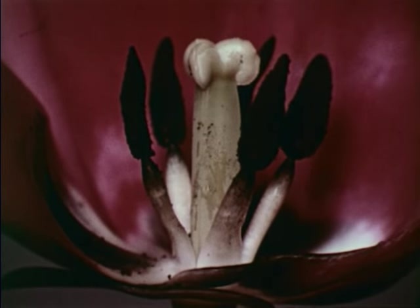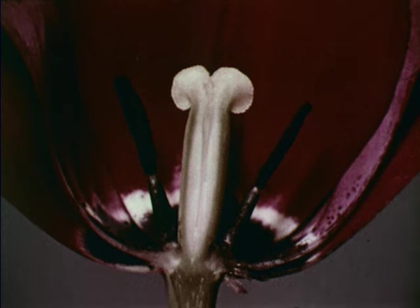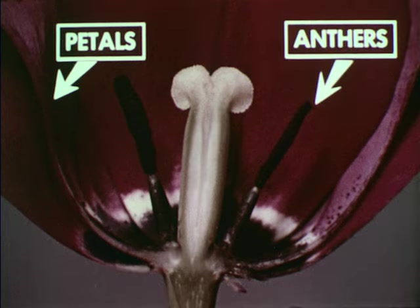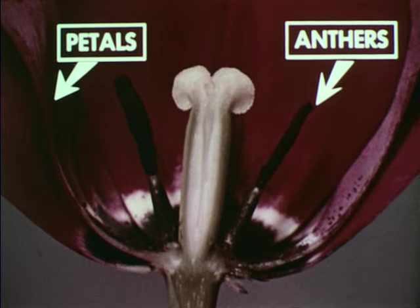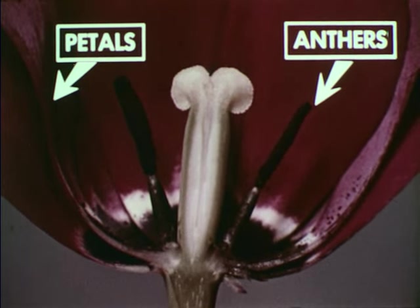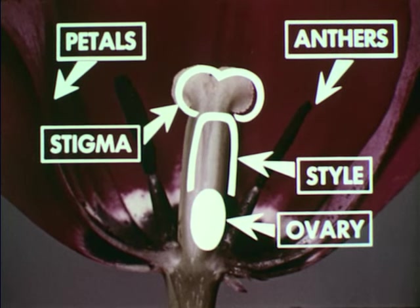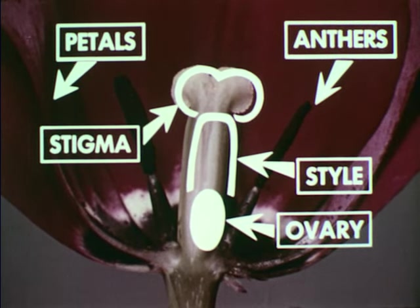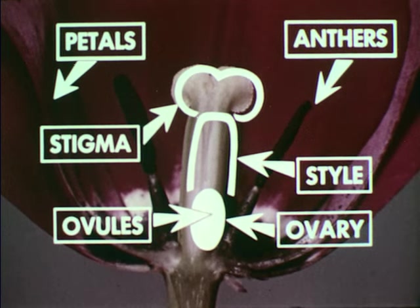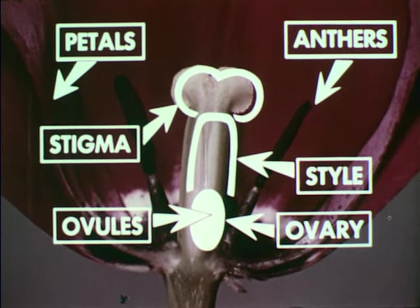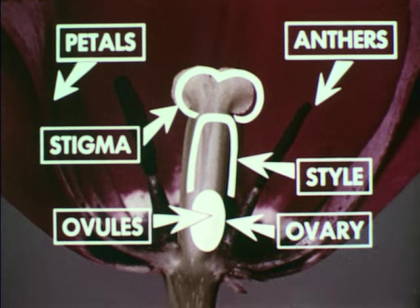This tulip has been cut lengthwise to show its structure. The petals are these conspicuous colored parts. These ends of the stamens are called anthers; anthers contain pollen. The pistil consists of the stigma, the style, and the ovary. Inside the ovary are ovules containing eggs. When fertilized by pollen, these eggs develop into mature seeds.